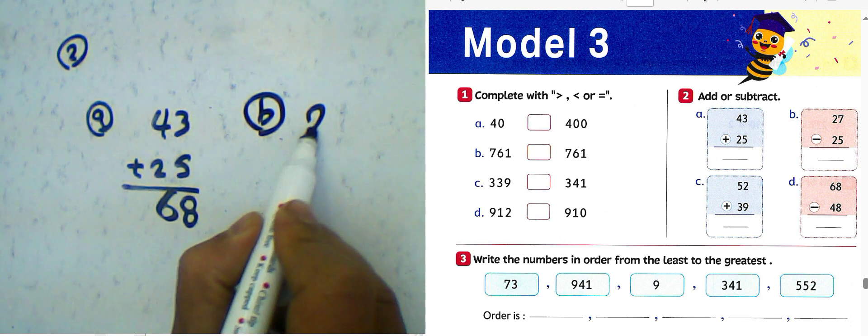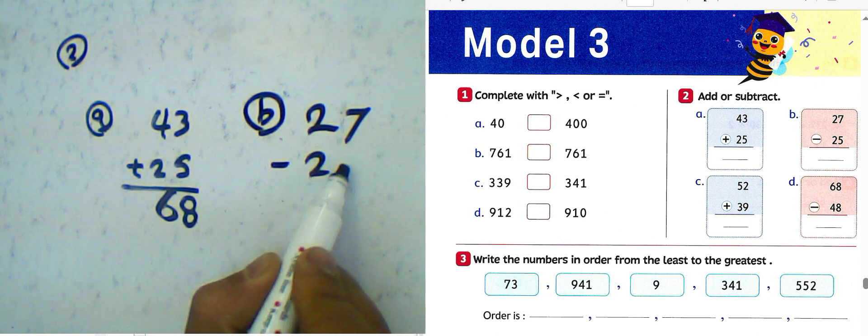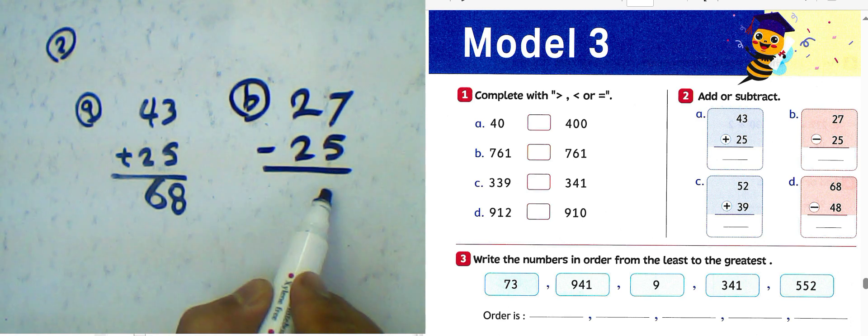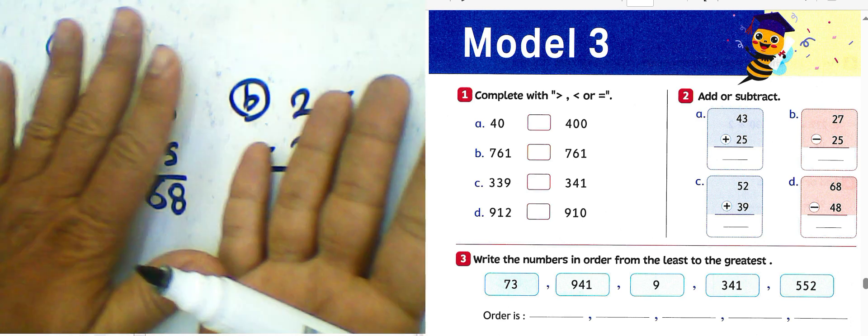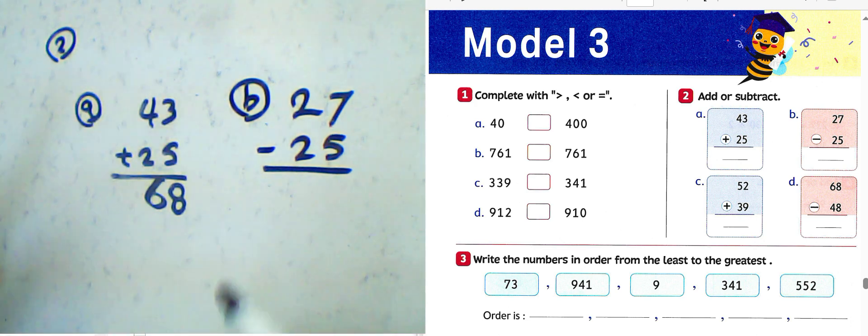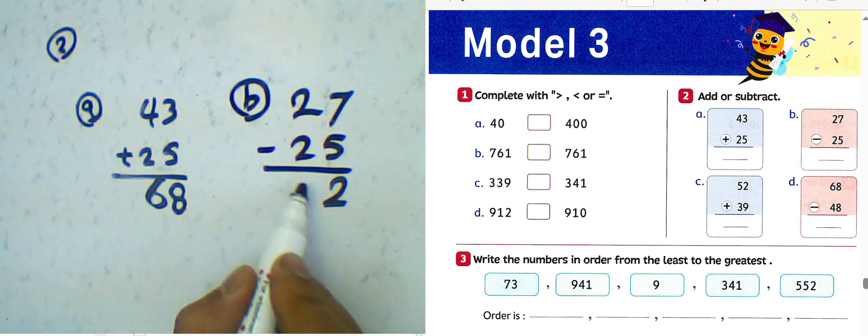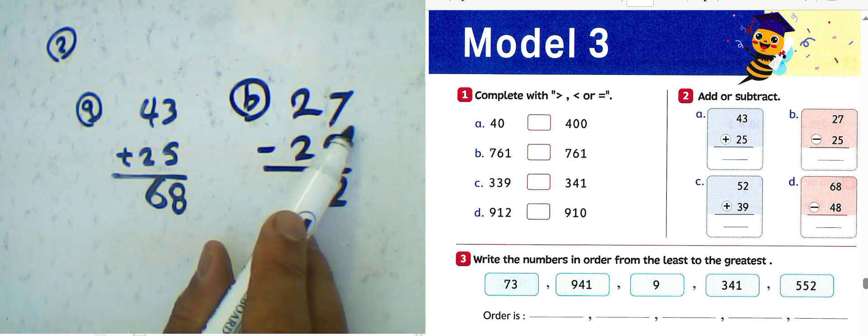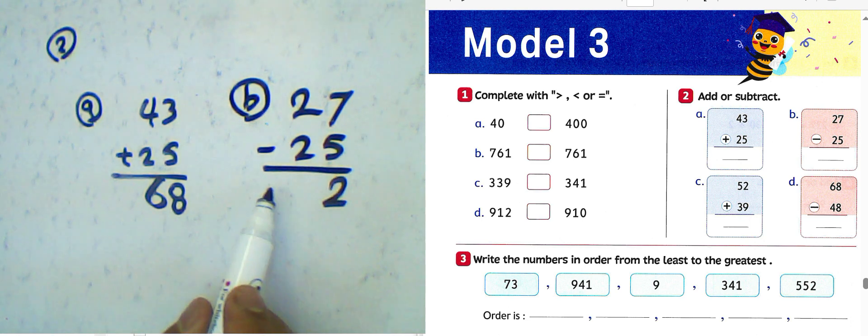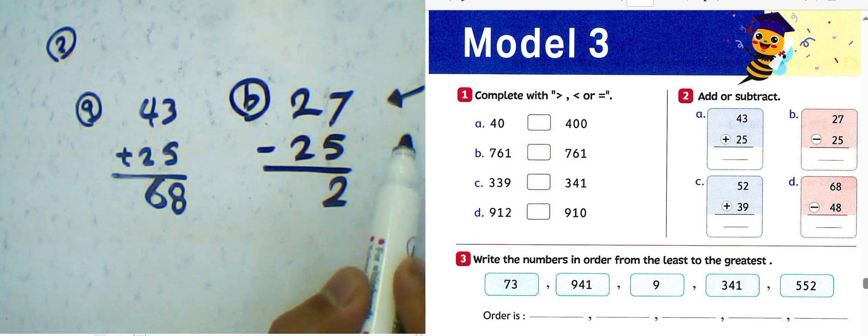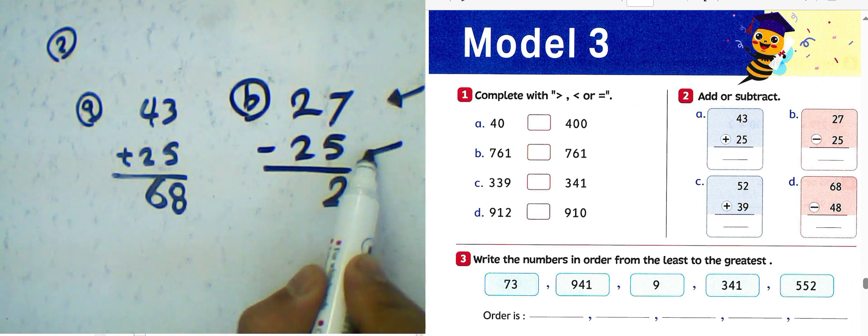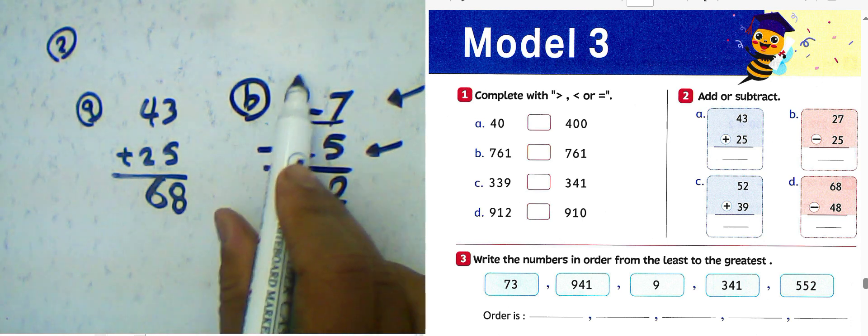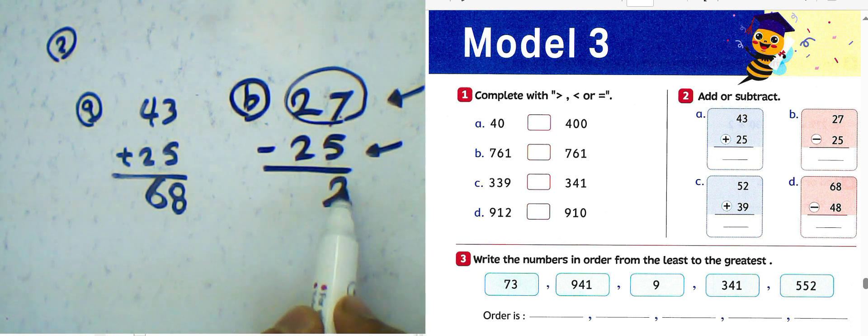Letter B: 27 subtract by 25. 7 minus 5, cancel 5 from it, with 2. And 2 minus 2, 0. Don't write 0 here to the front side, so the result will be 2. 27 minus 25, the difference between them will be 2.